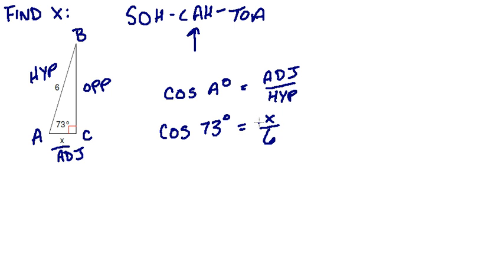So to get X by itself, we're going to have to multiply both sides by 6. So we get 6 cosine 73 equals X.